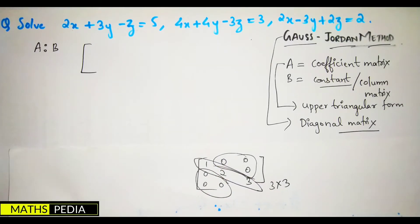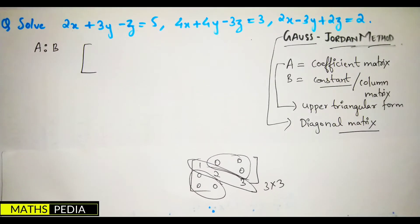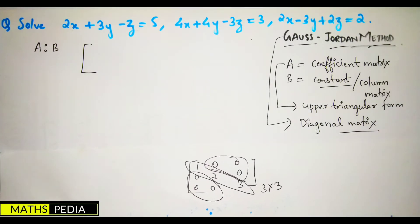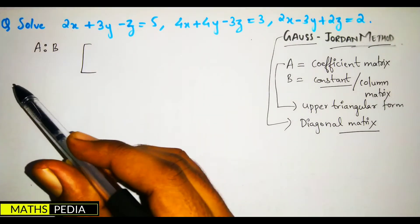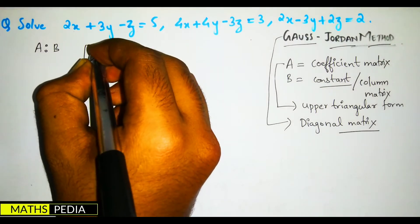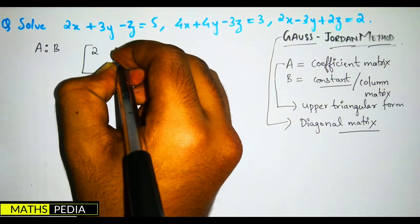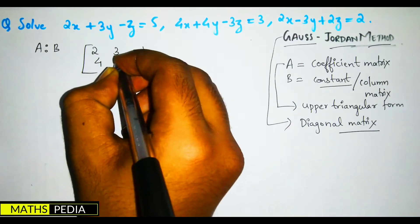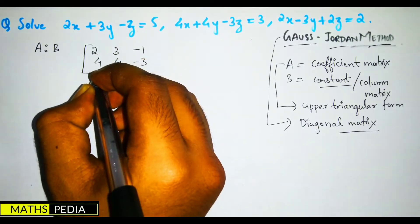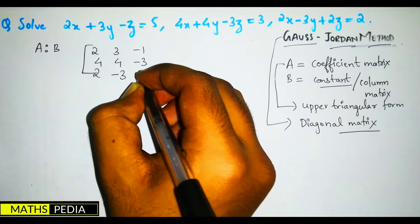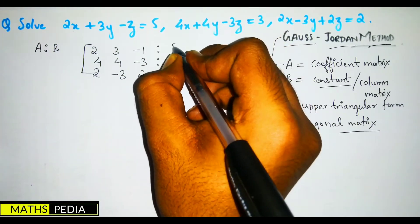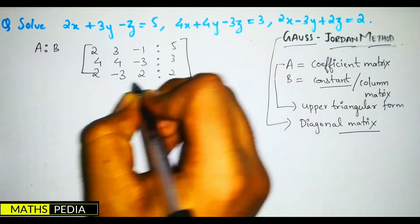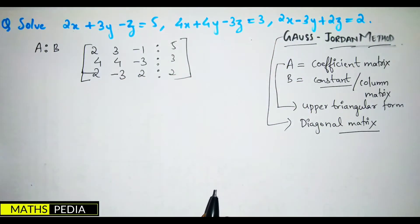That is the diagonal matrix. To achieve this, first write the augmented matrix: [2, 3, -1 | 4], [4, -3, 2 | -3], [2, 5, 3 | 2]. We are going with the same initial steps as the Gauss elimination method.